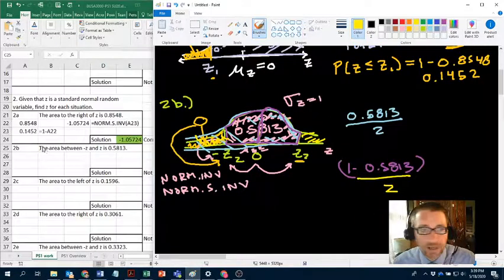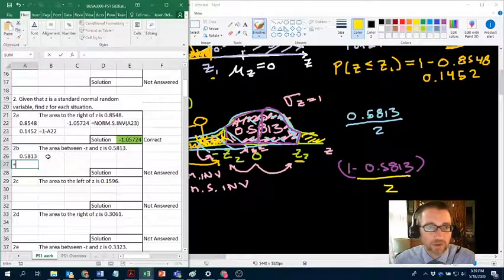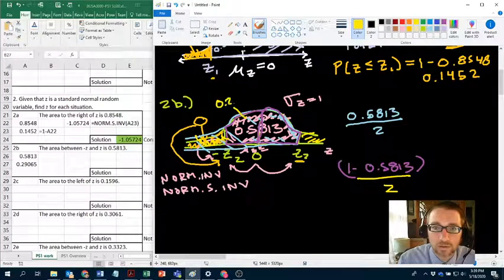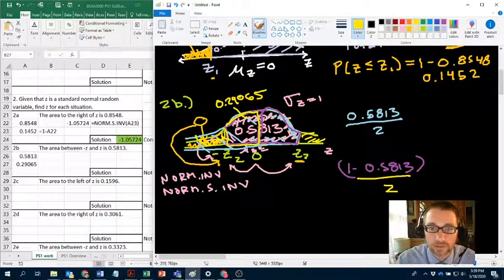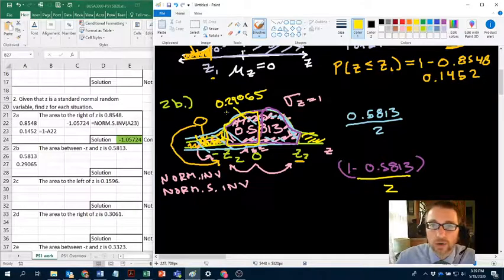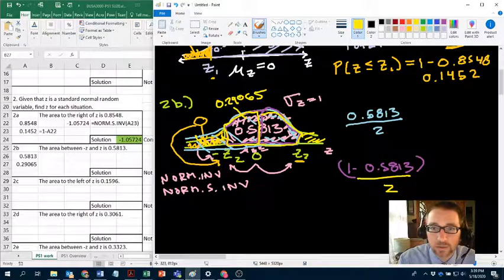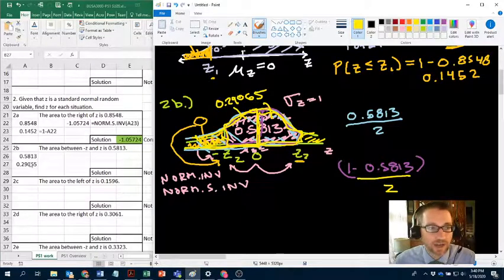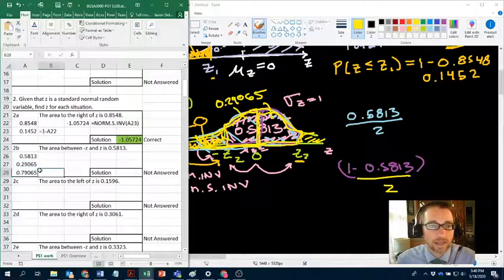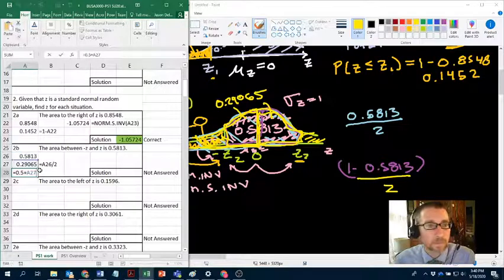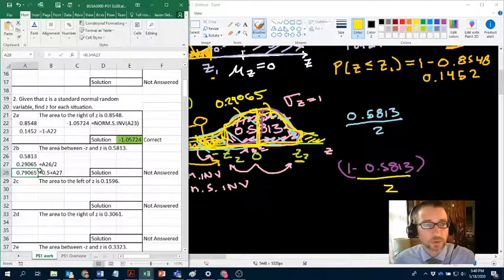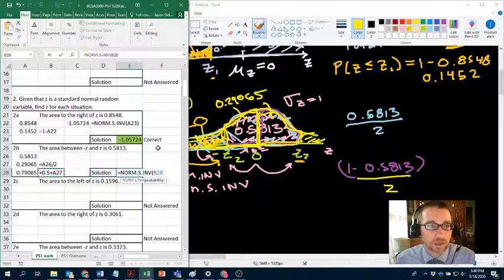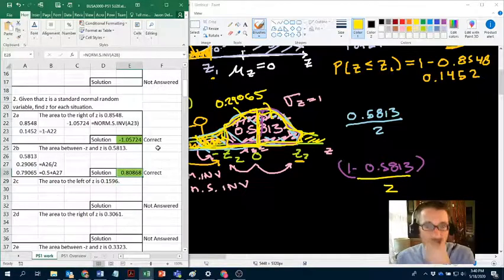What we need to do is take advantage of the fact that this is symmetrical. If that area is 0.5813, then we can split that in half. That will give us the size of this area and the size of this area. So we've got 0.5813. If we divide that by 2, that tells us that one half of this is 0.29065. And now that plus 0.5 should give us the area to the left of z2. So we took it, we divided by 2, and then we added the half to it. Norm.s.inv of this. There you go. 0.80868.